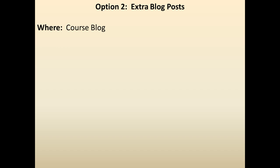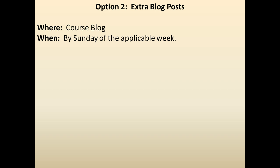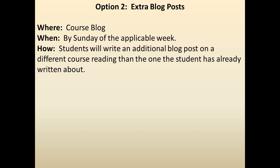Option two: extra blog posts. That would happen on the course blog, and it would be due by Sunday of the applicable week — that is, whatever you're writing about has to be a reading from that week. You can't do a blog post in week 10 with a reading from week 4. You need to stay consistent and stay on top of whatever it is that we're reading. Students will write an additional blog post on a different course reading than the one already written about. So in a given week, rather than writing one, you write two. Or, since we have more weeks than actual posts due — we have 13 weeks and you only have to post 10 blog posts — you can keep doing posts throughout the semester and have three that count towards extra credit.